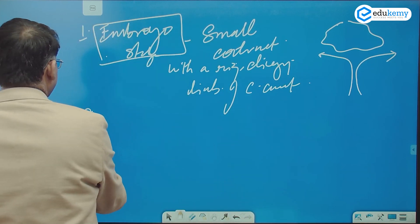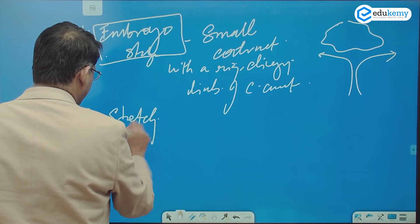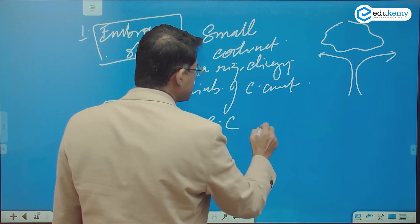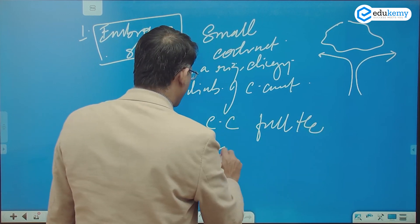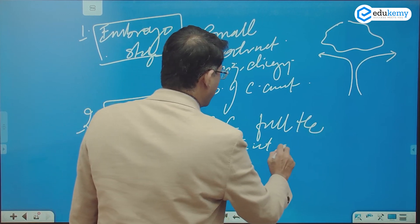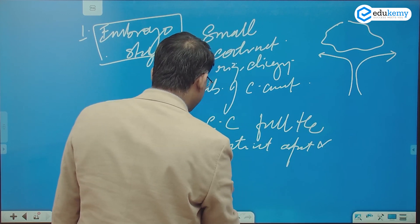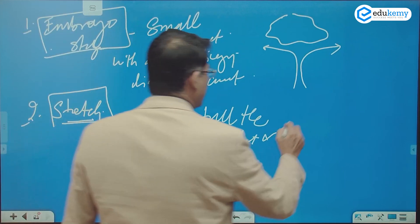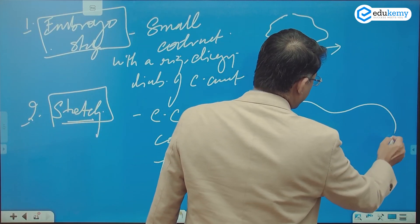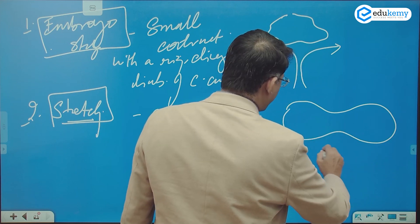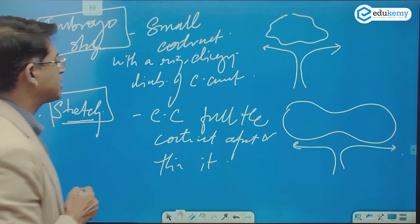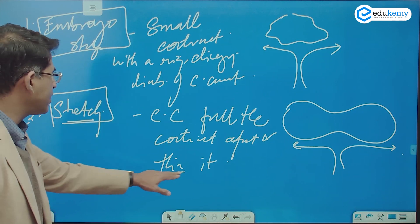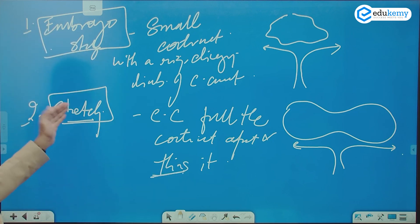The second stage is the Stretching Stage. The convection currents pull the continent apart and thin it. This is how the divergent boundary begins forming — the continent is pulled apart and thinned during this embryo to stretching transition.